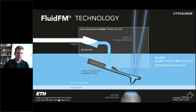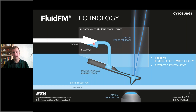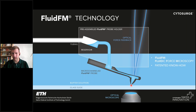The basic idea is very easy to understand. We have an AFM cantilever that has a microfluidic channel inside of it, going all the way from the tip to a reservoir, which is connected to a microfluidic pressure controller. This reservoir can be filled with one microliter of sample liquid that differs depending on the application. The channel goes all the way to the tip, where there is always an aperture.